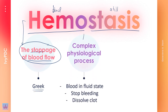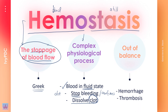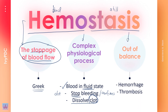Hemostasis is a complex physiological process that keeps the circulating blood in a fluid or liquid state, and when there is injury, it produces a clot to stop the bleeding. It also confines this clot to the site of injury, and after that, it will dissolve the clot when the wound starts to heal. When there is an imbalance in the hemostasis system, there could either be hemorrhage, which refers to bleeding, or thrombosis, which refers to clotting.